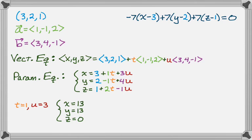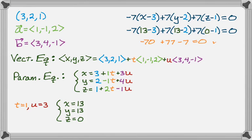So say we use t as 1 and u as 3. If you do that and you plug into the parametric equations, you get that x is 13, y is 13, and z is 0. Then I'm going to go up to this equation that I wrote and substitute it. So I have negative 7, and then 13 minus 3, and then 7, 13 minus 2, and then 7, and 0 minus 1. And if I expand this, I get negative 70 plus 77 minus 7, and that equals 0. So it worked out. All three forms are equivalent. They're just different ways of writing it and representing it.